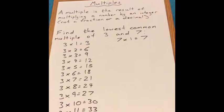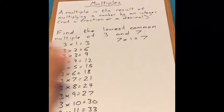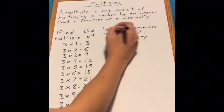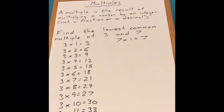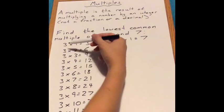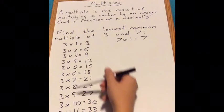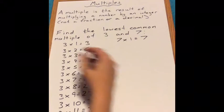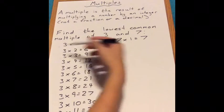Now sometimes you will find a question which asks you to find the lowest common multiple of 3 and 7. So again, what we do is we take the number, we multiply it by an integer to find the multiple. So we've done all our 3 times tables here.